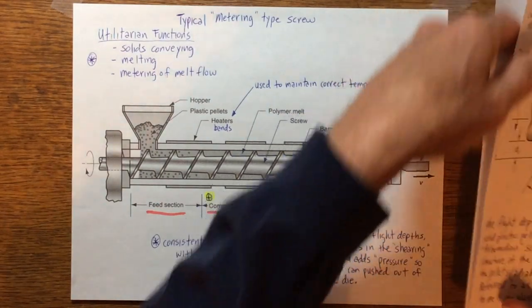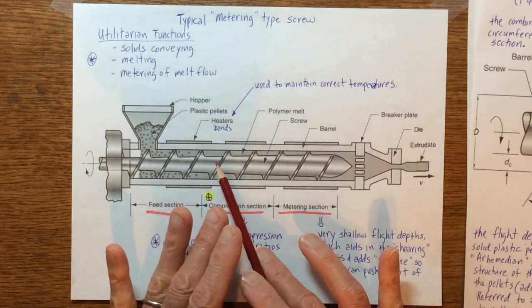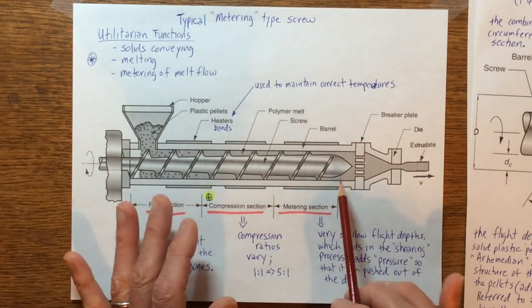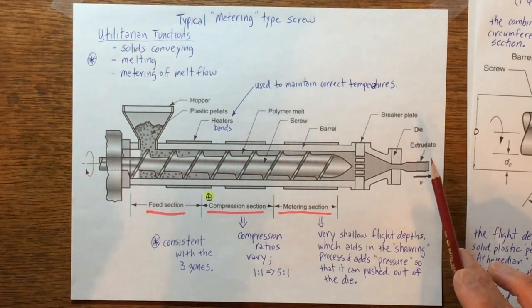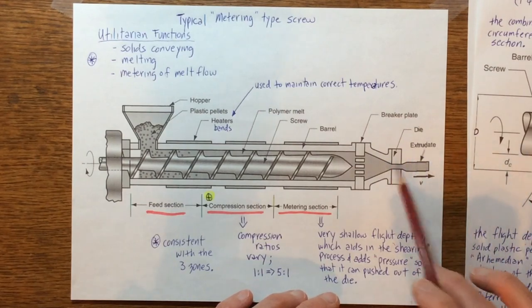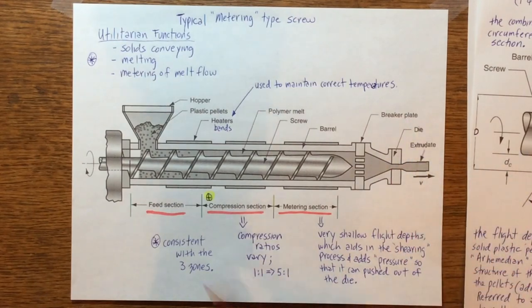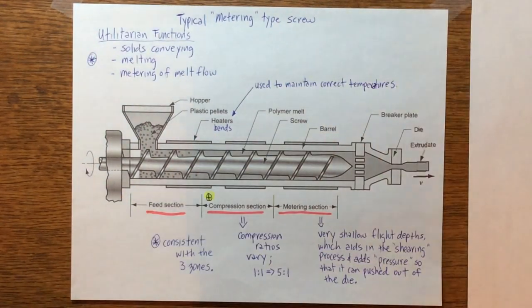What this does is it turns it into more of a laminar flow with these breaker plates. It has the geometry of a honeycomb kind of a thing, so it smooths out the flow and makes it a little more laminar. Now I wanted to talk a little more specific about one of the other processes that's very significant and important, especially here in Texas, and it's injection molding.